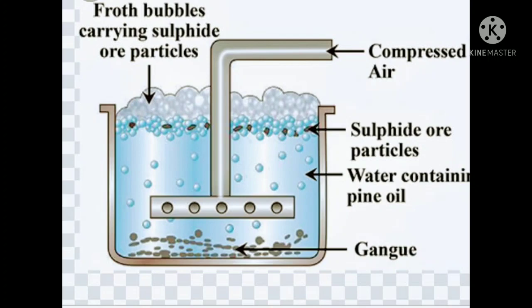The principle is the difference in wettability of the ore with oil and the gangue with water. The tank contains the desired ore with impurity, collectors (pine oil or fatty acids), and water. Agitation by compressed air causes lighter sulphide ores — mainly zinc blende and galena — to rise to the top as froth, while the gangue settles at the bottom.